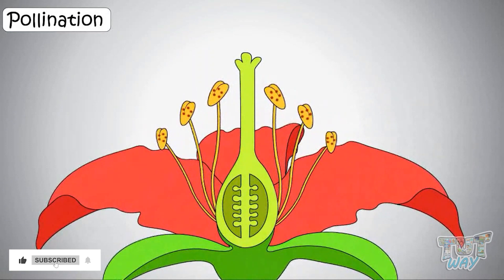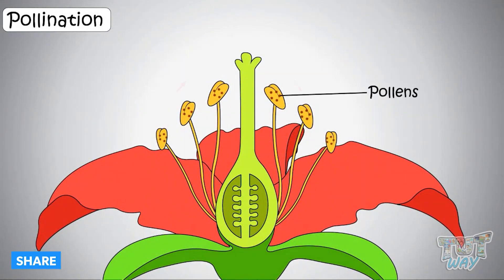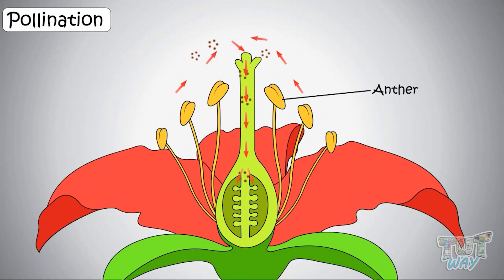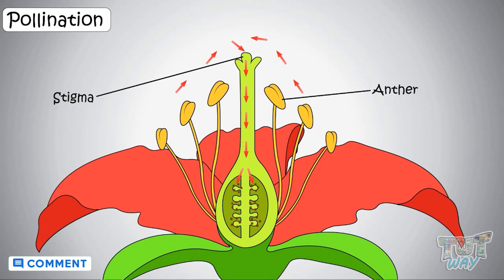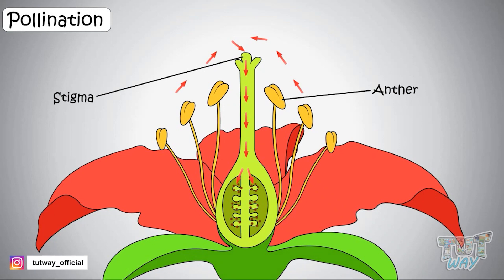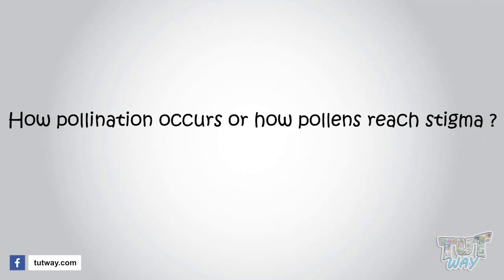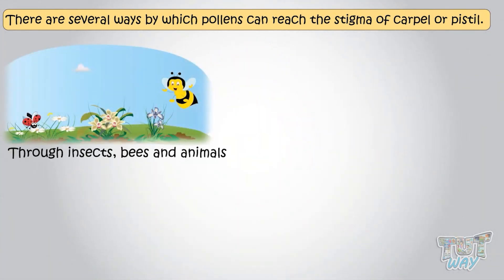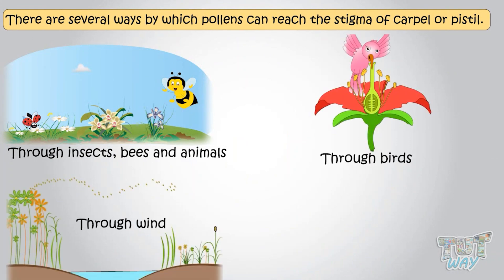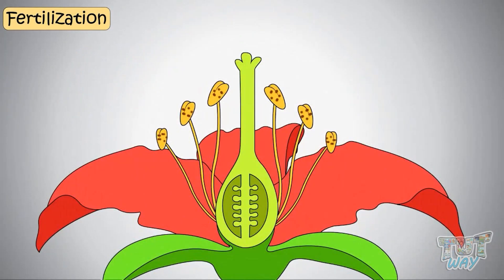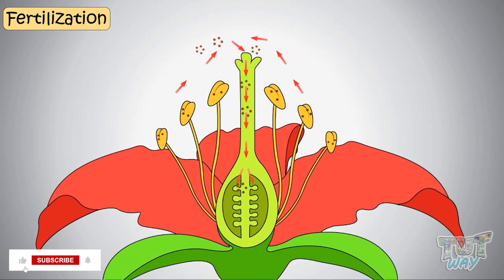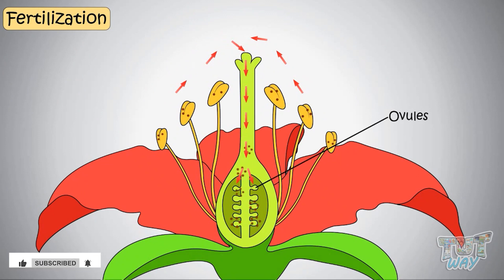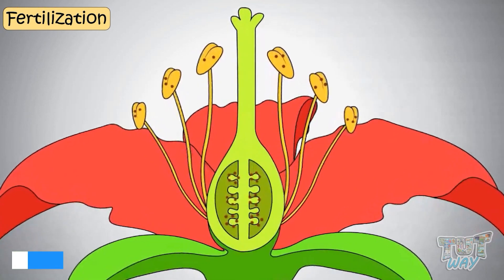We learned that pollination is a process by which pollens are transferred from the anther, that is the male part of the flower, to the stigma, which is the female part of the flower, and thereby enabling fertilization and reproduction. Now let's see how pollination occurs or how pollens reach stigma. There are several ways by which pollens can reach the stigma of a carpel — through insects, bees, animals, birds, wind, or even water. The process by which pollens, after reaching the stigma of the pistil, reach the ovules present in the ovary is called fertilization, which leads to the formation of seeds.